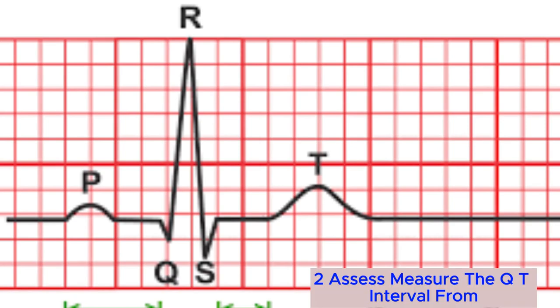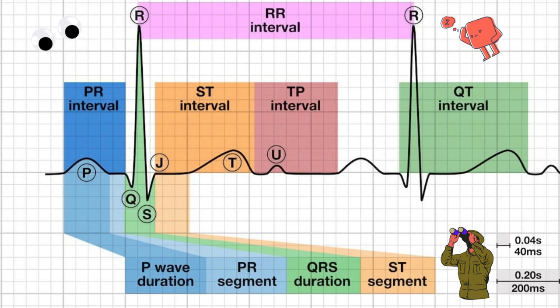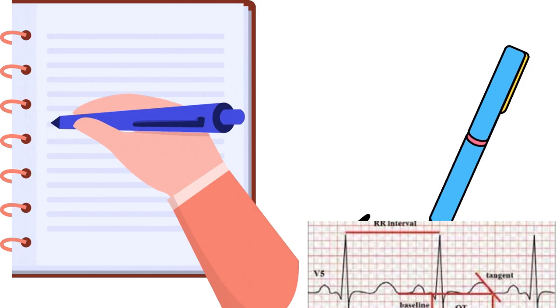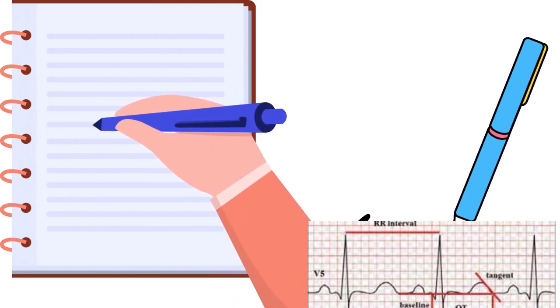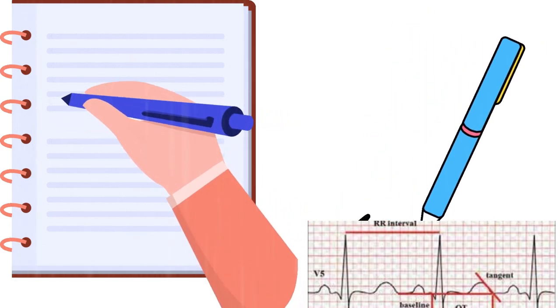2. Assess — measure the QT interval from the start of the QRS complex to the end of the T wave. Take note of any abnormal morphology or variations that may affect the accuracy of the measurement.